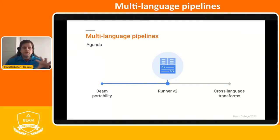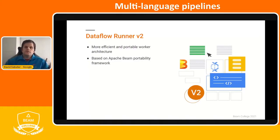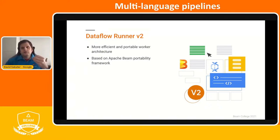I'm introducing this in the context of Dataflow because the demo and features I'm showing are related to Dataflow. Beam portability is available in Flink and Spark as runners, but in Dataflow it is only available on the Python SDK. The Dataflow Runner version two is more efficient and portable, and has an architecture based on the Beam portability framework I just introduced.